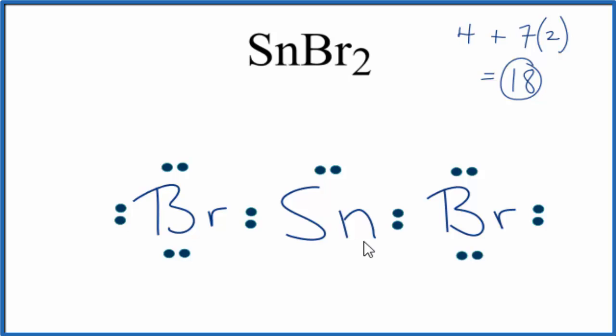Tin here doesn't have a complete octet, but that's okay, it's an exception, it can exist with just these 6 electrons around it. This is a little bit tricky because we have tin, which is a metal, and these non-metals,